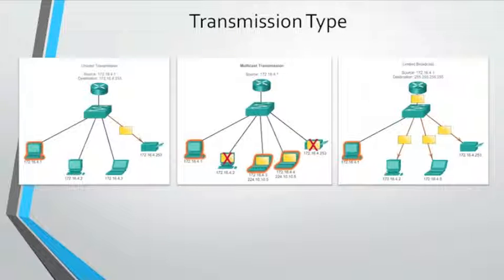Transmission types: in an IPv4 network, a host can communicate in three ways — unicast, broadcast, and multicast. Unicast is the process of sending a packet from one host to an individual host. It is used for normal host-to-host communication in both client-server and peer-to-peer networks. Unicast packets use the address of the destination device as the destination address and can be routed through an internetwork.